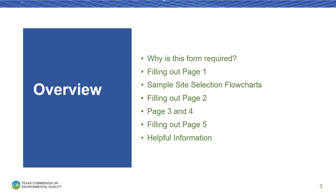This page provides an overview of what will be covered in the video. First, we'll discuss why this form is required, and then we'll cover the specific requirements on each page of the form separately. Last, we have information on where you can go to find additional assistance if needed. The video has been broken into chapters so that you can easily locate the information you need. Hover your mouse over the video and click the section in the seek bar that corresponds to the section you need assistance with.